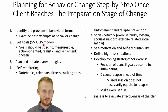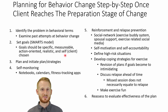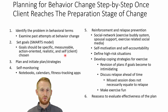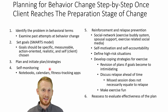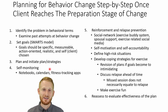Step two: set their SMART goals — Specific, Measurable, Action-oriented, Realistic, and Self-determined, meaning they pick their own goals. Go watch the SMART goals video if you're unfamiliar with this system. Step three: plan for and initiate the plan that will lead to a lifelong behavioral change. Write it out, script it out, have both of you on the same page about what you're doing and why, then set a date — say 'We're starting this Monday' — and start the plan.